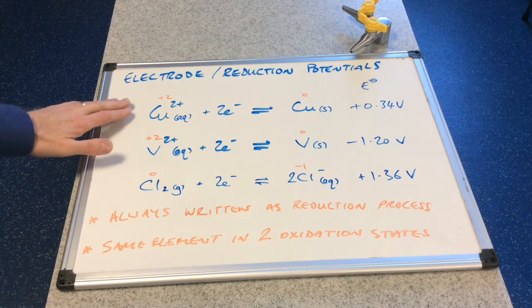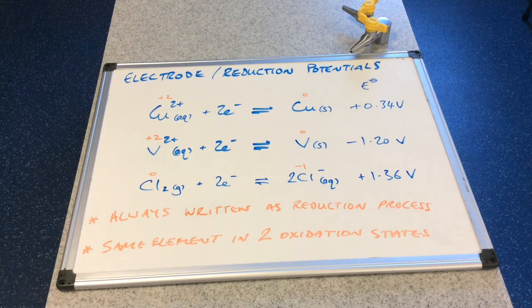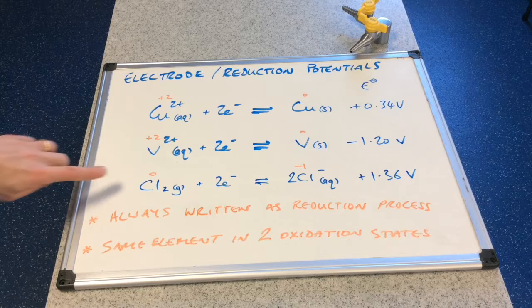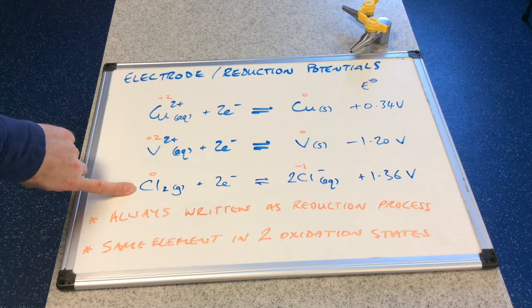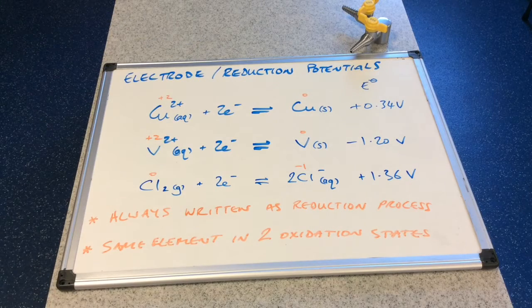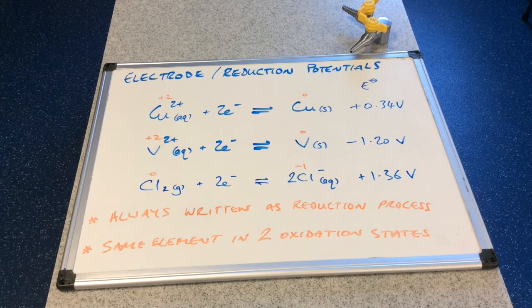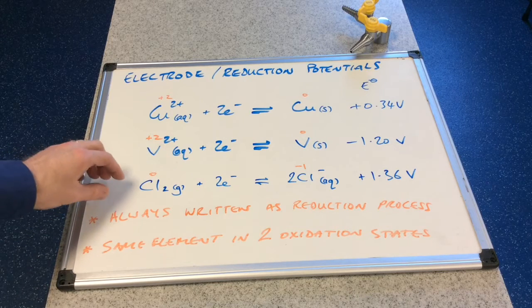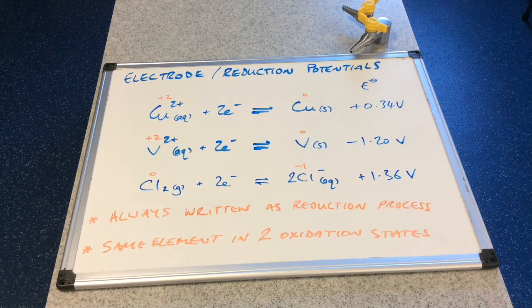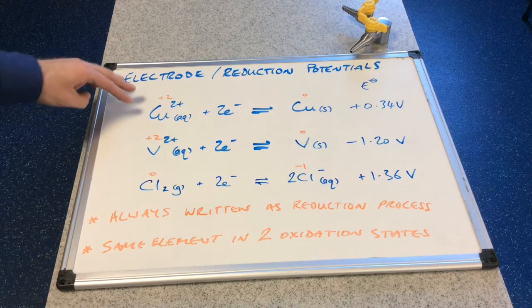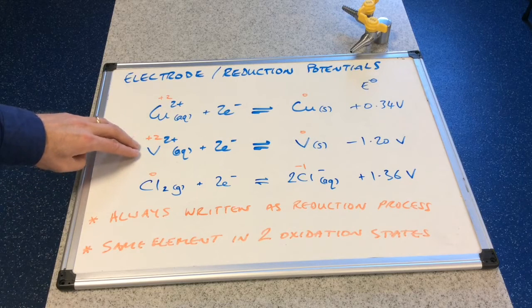Because it's telling us how able is the thing on the left, how able is it to be reduced by gaining the electrons. So you'll notice there we've got this one here, the chlorine chloride half equation has a standard electrode potential of plus 1.36 volts. The important thing here is this out of these three this is the most positive of the voltages. So what does that tell us? It means that out of these three, chlorine is the most able to gain electrons. So the next most able is copper, copper 2 plus. And the least able to gain electrons would be the V2 plus ion.